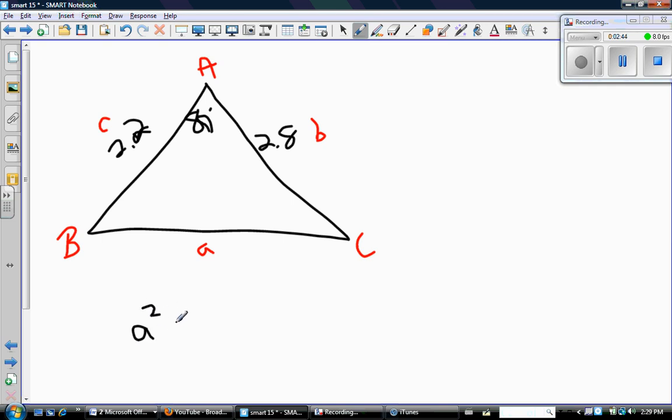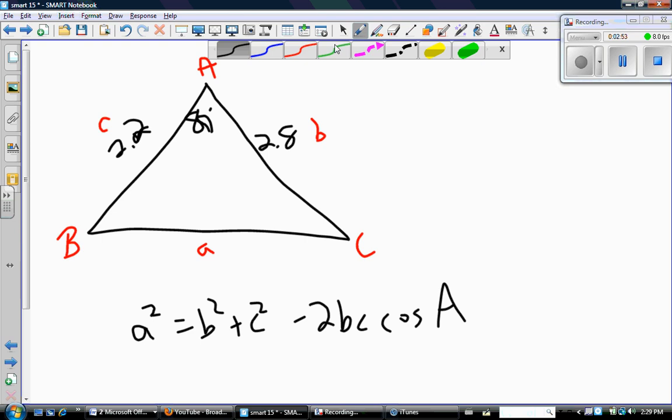And the side that I'm looking for is a, so therefore I'm going to set up the cosine law like this: a squared equals b squared plus c squared minus 2bc cosine A. So again, make sure you understand how the cosine law works. This side here matches the angle over here, and the other two variables are the other two sides of the triangle. So I'm looking for little a, I have b, c, and I know angle A.